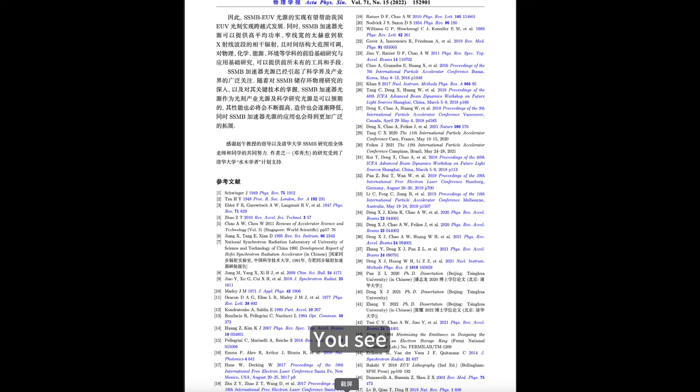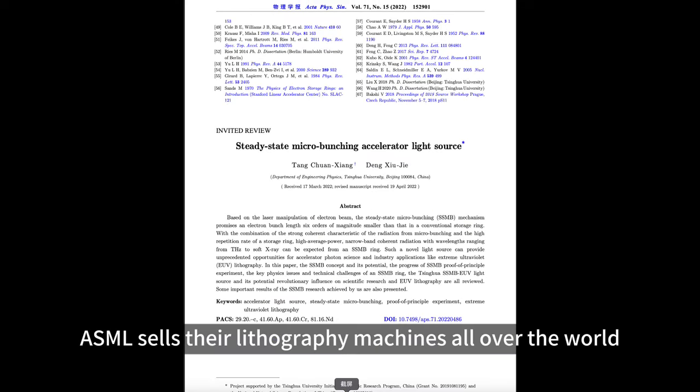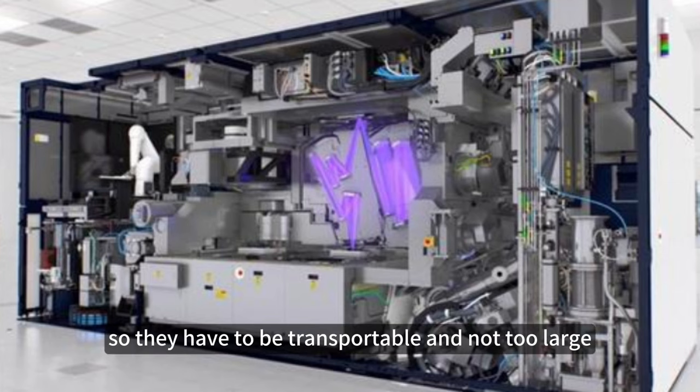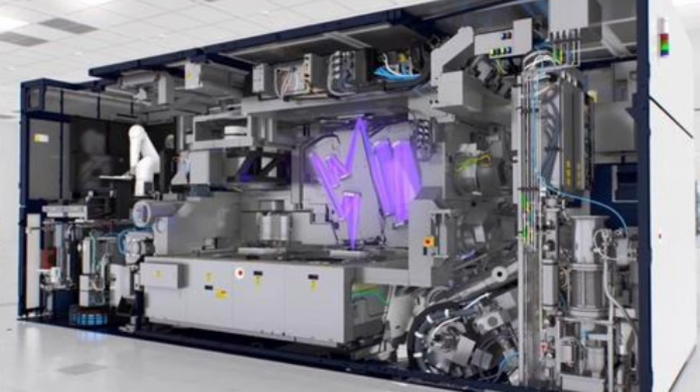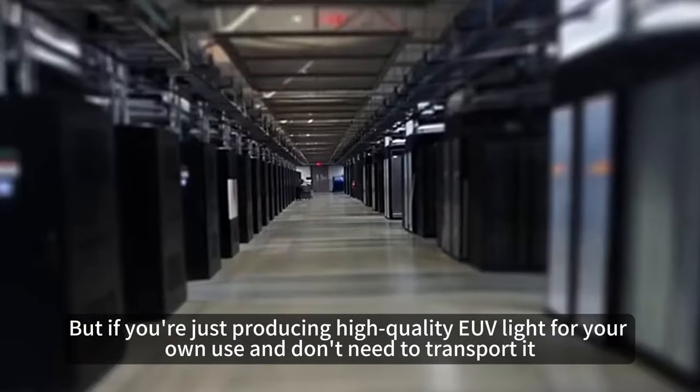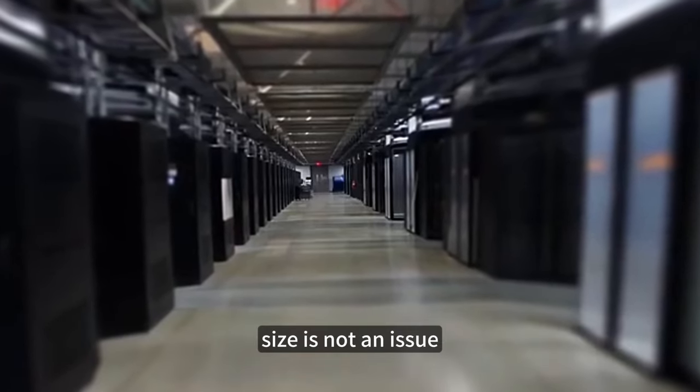You see, ASML sells their lithography machines all over the world, so they have to be transportable and not too large. But if you're just producing high-quality EUV light for your own use and don't need to transport it, size is not an issue.